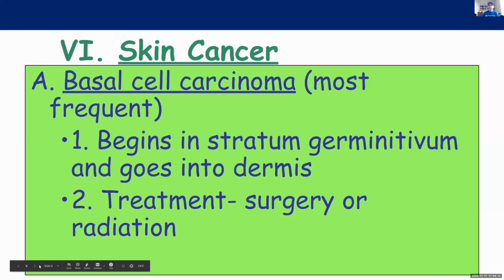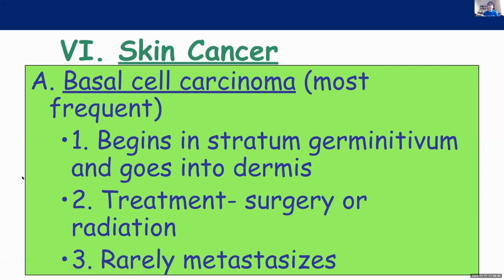It begins in the stratum germinativum, which is part of the epidermis, and then it will grow into the dermis. This type of cancer rarely metastasizes. Does anybody remember what metastasize means? Kim says spreads, Liliana said spread — yes, exactly. So metastasize means spread. This type of cancer usually stays in the skin and doesn't spread to other locations in the body. You don't want a cancer to metastasize. You always want to try to catch that cancer early before it metastasizes, before it spreads to another organ. Because if you can catch it in the skin in one location and cut it out before it has a chance to spread, you've cured that person of their cancer.